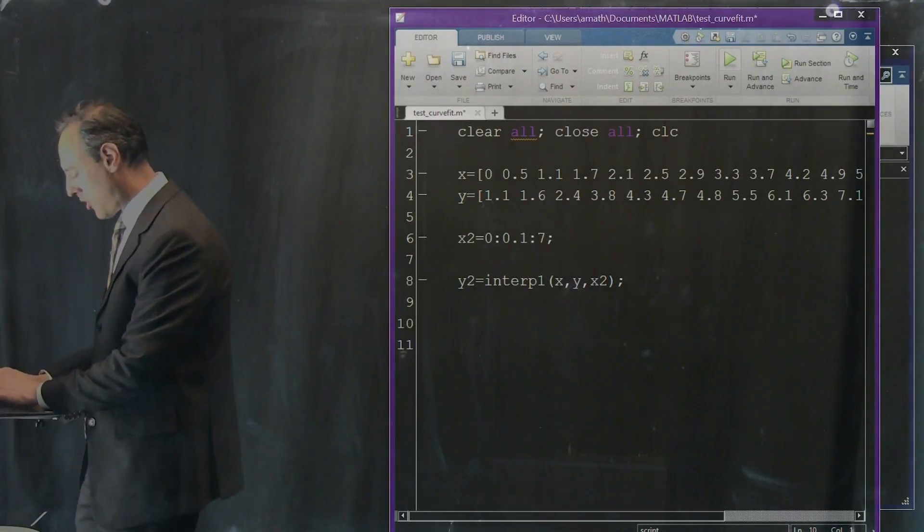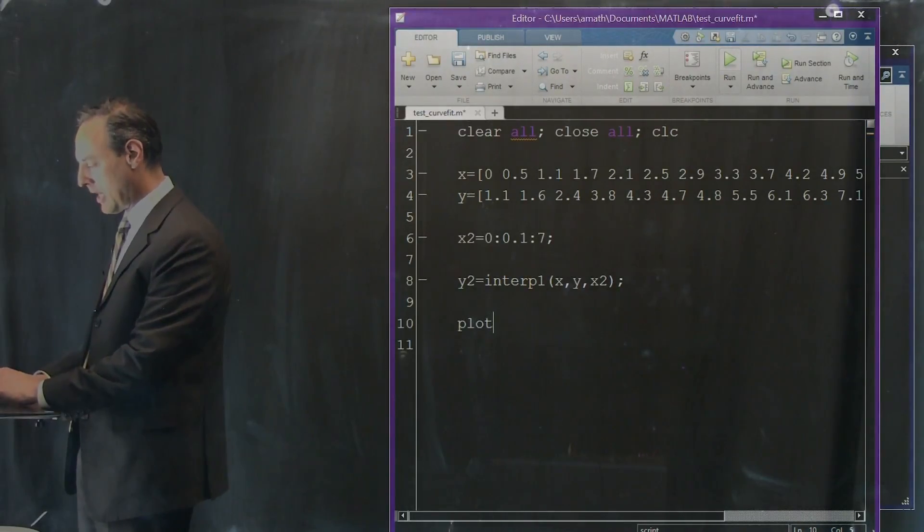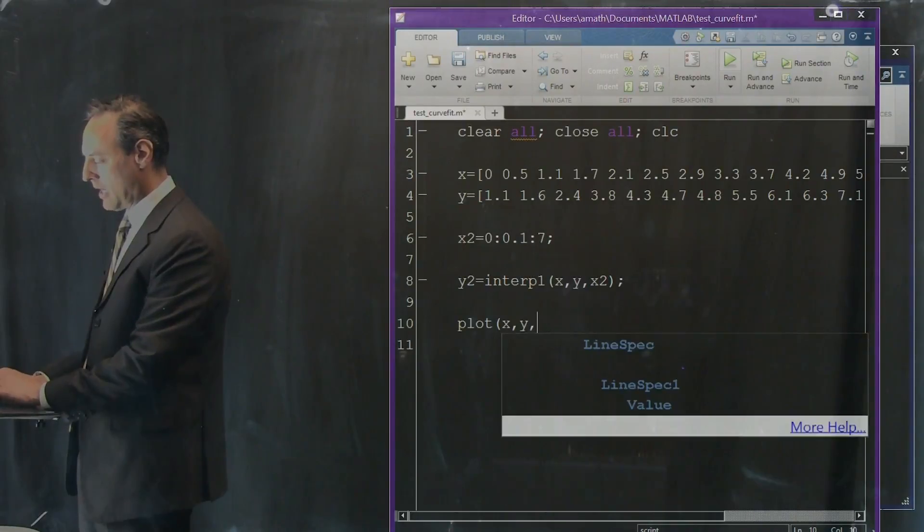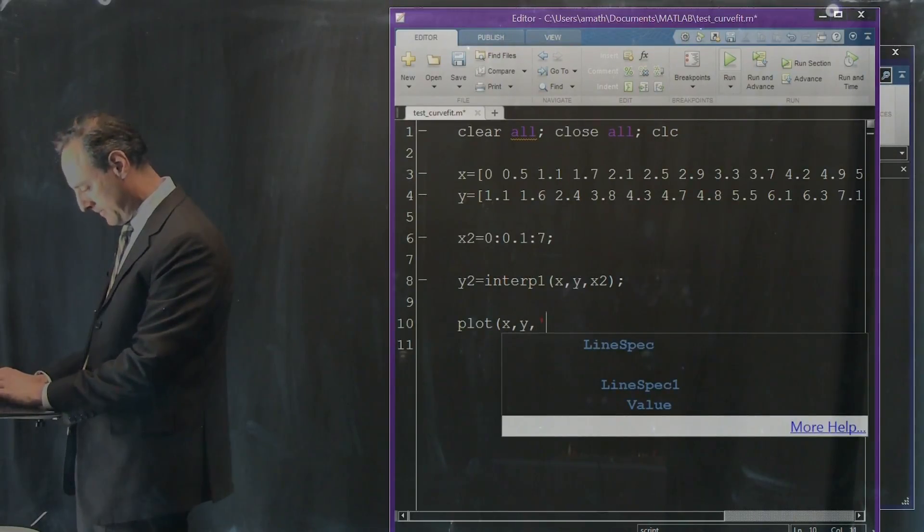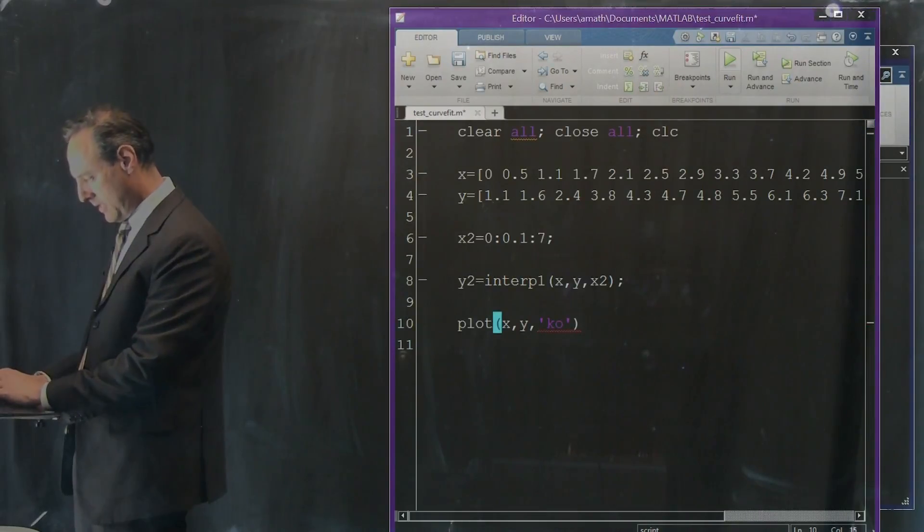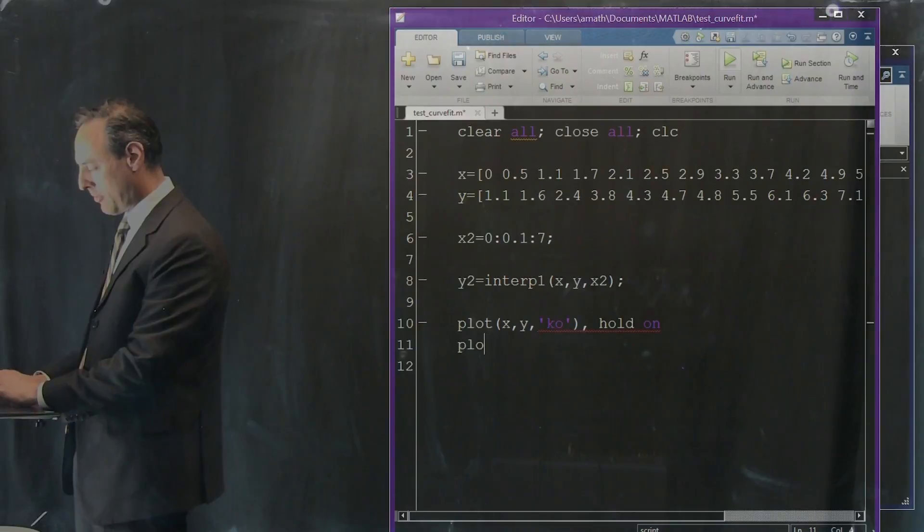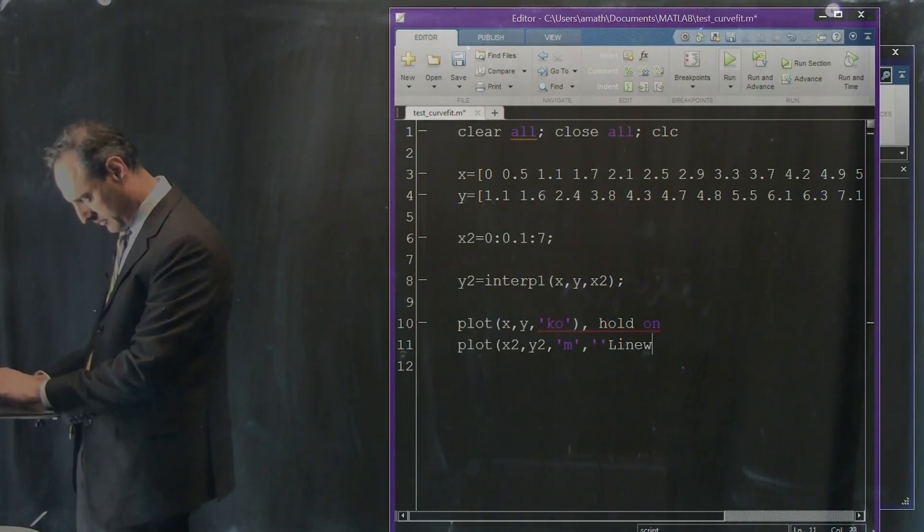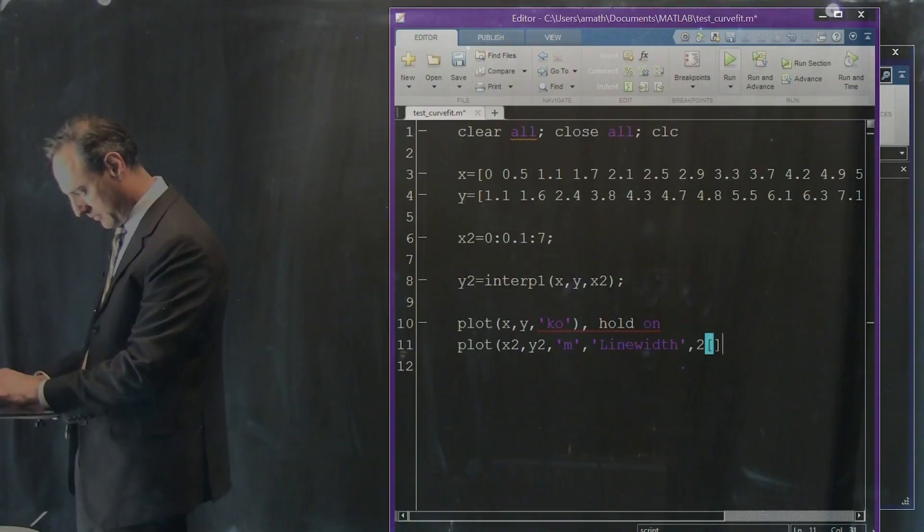So let's go ahead and draw what this might look like. So plot x, y first, and we'll make that with the black circles. And then we'll also plot x2, y2, the interpolated values, magenta, with a line width of 2.